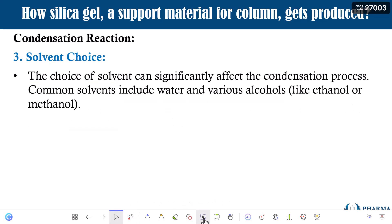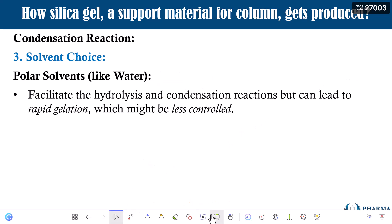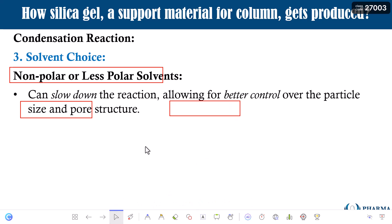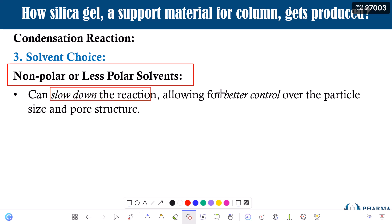The third important parameter is the solvent choice. The solvent used during the condensation reaction can also influence the outcome. Generally, water or alcohols like ethanol or methanol are used. Using water, a polar solvent, facilitates the hydrolysis and condensation reactions but can lead to rapid and less controlled gelation. Using less polar solvents like alcohols slows down the gelation and results in better control over the particle size and pore structure.